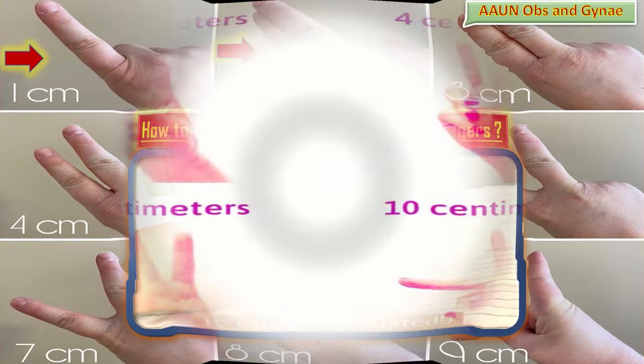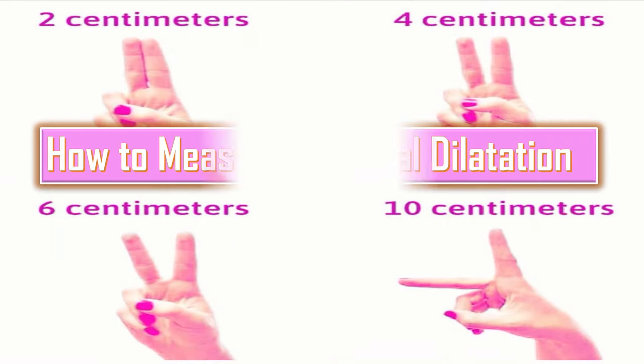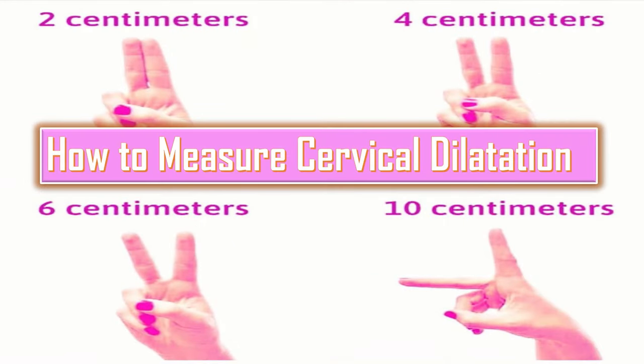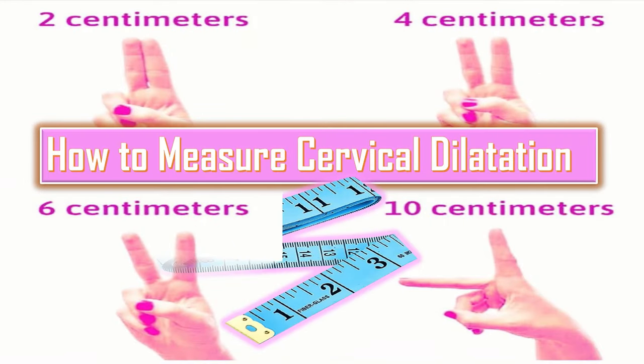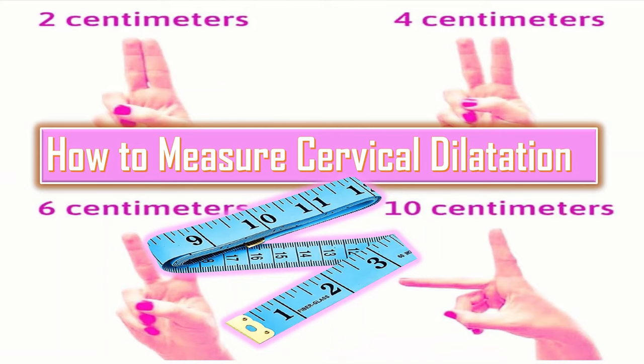To measure cervical dilatation accurately, you can use a ruler or tape measure to stretch your middle and index finger and get an idea of the way to estimate dilatation. So measure your finger size before doing a PV examination.